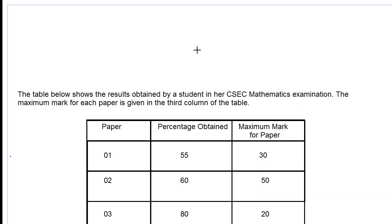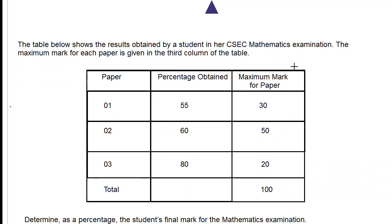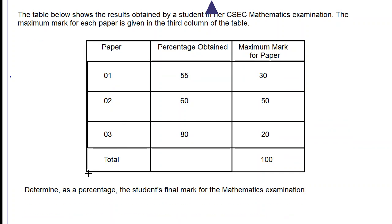Good day everyone. We are working on this percentage question. The table below shows the results obtained by a student in a CSEC mathematics examination. The maximum mark for each paper is given on the third column of the table. We have paper 1, paper 2, and paper 3 of the mathematics exam. We also have the percentage obtained in each paper and the maximum mark for each paper. We are asked to determine, as a percentage, the student's final mark for the mathematics examination.